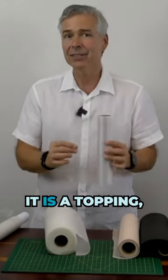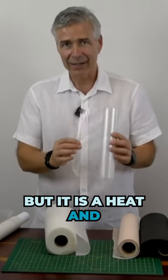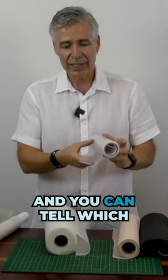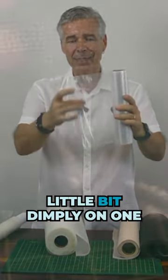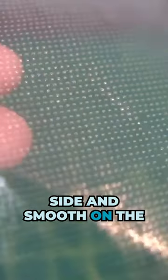This is called a heat-and-gone stabilizer. It's a topping, but it's a heat-and-gone stabilizer. You can tell which side goes down because it's a little bit dimply on one side and smooth on the other.